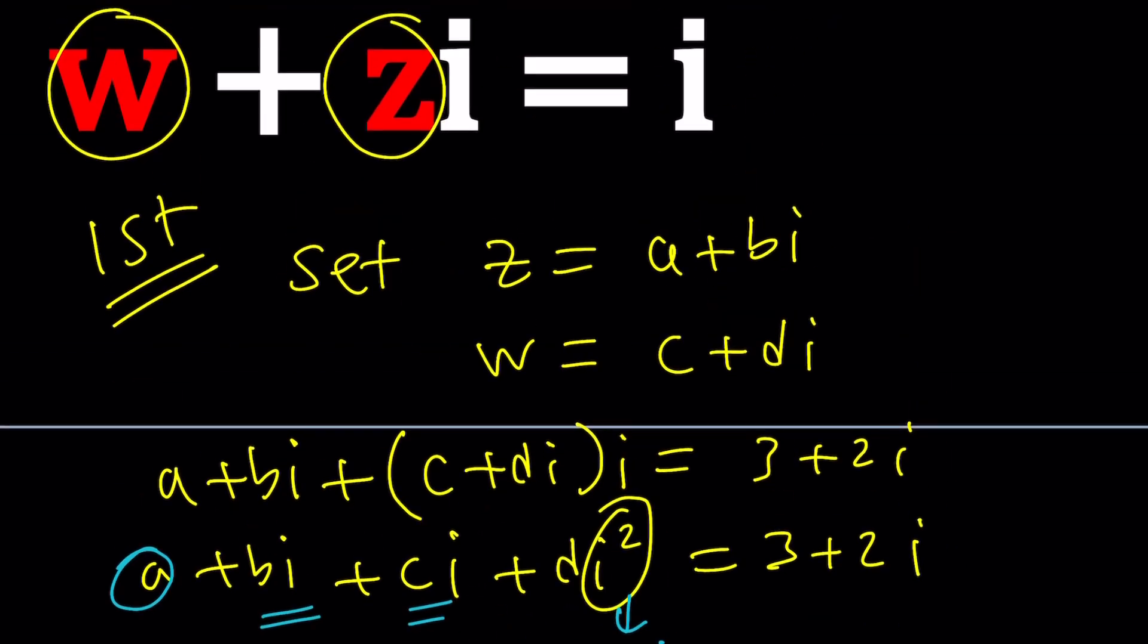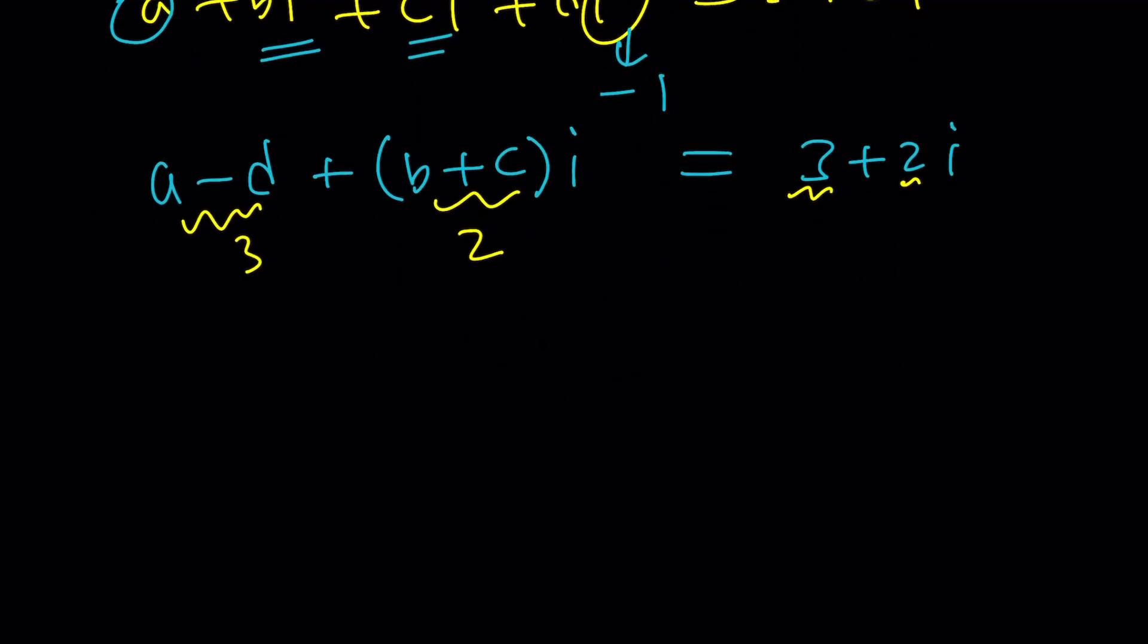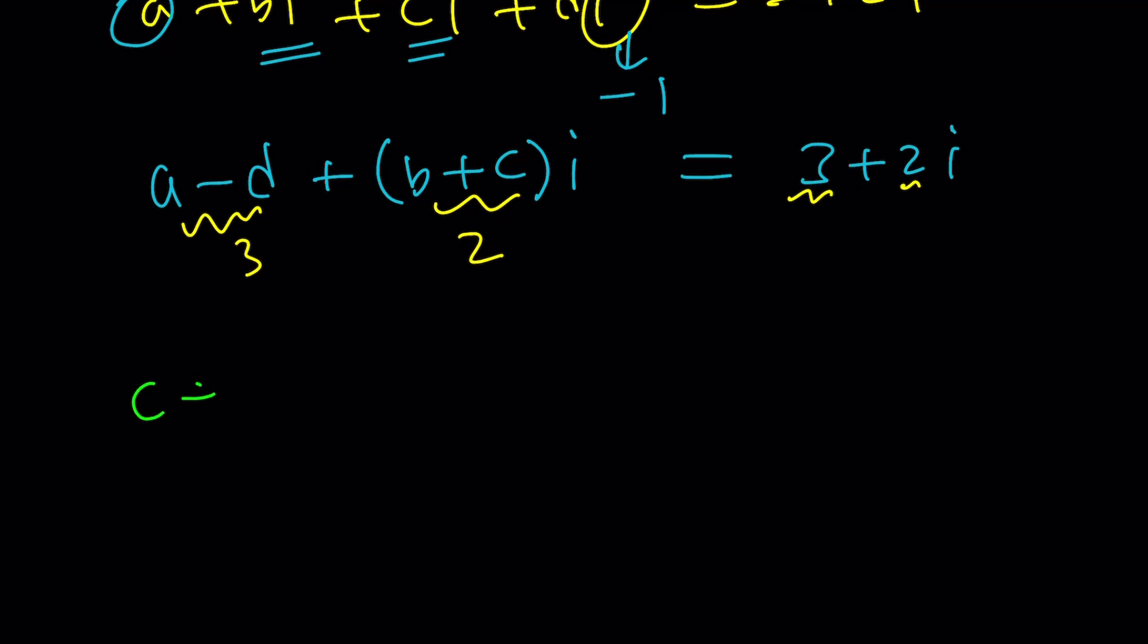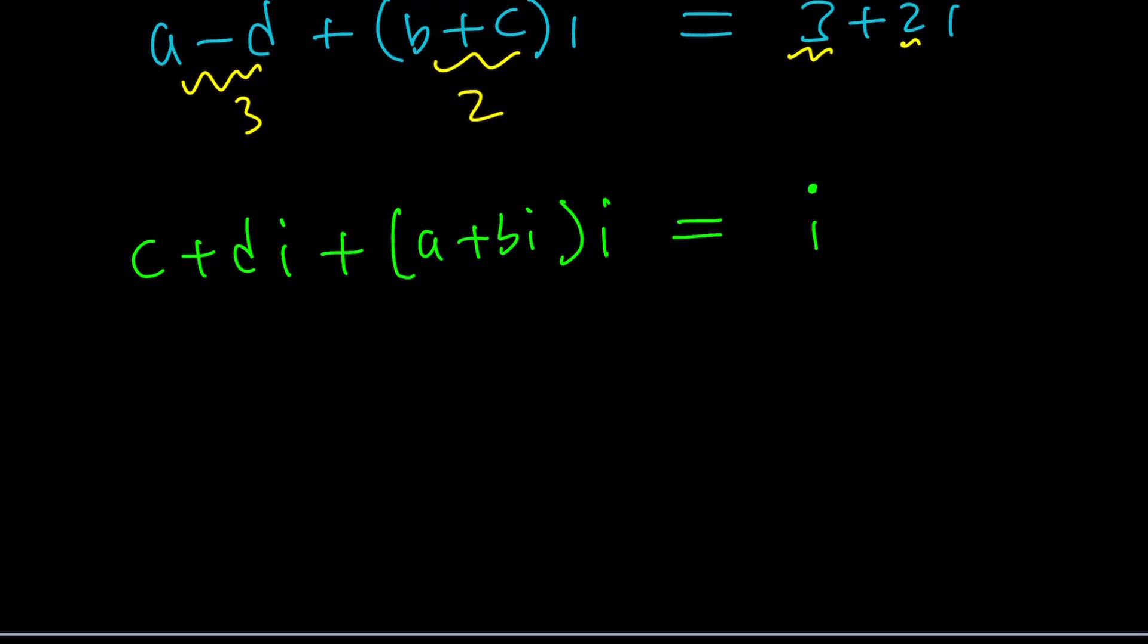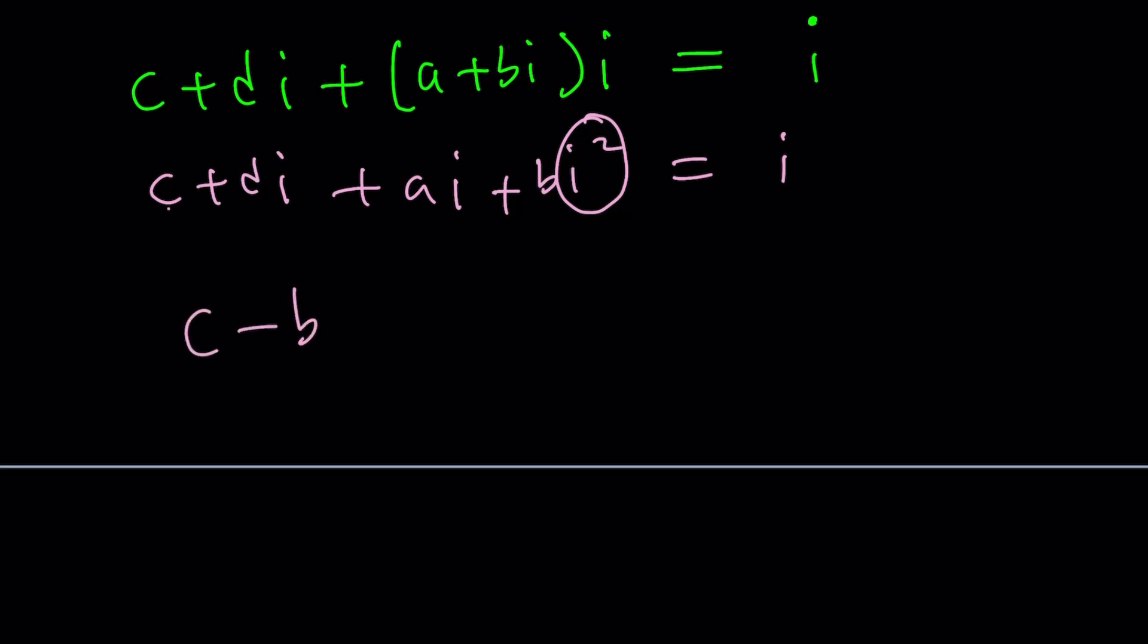Let's come up with another equation that brings two equations, and then we'll put it all together. That comes from the second equation. w is c plus di. So we have c plus di plus z multiplied by i. Remember that? Always have your notes with you if you are forgetful like me. So let's distribute. This gives us c plus di plus ai minus b equals i. Let's do it the same way. c minus b plus (d plus a) times i equals i.